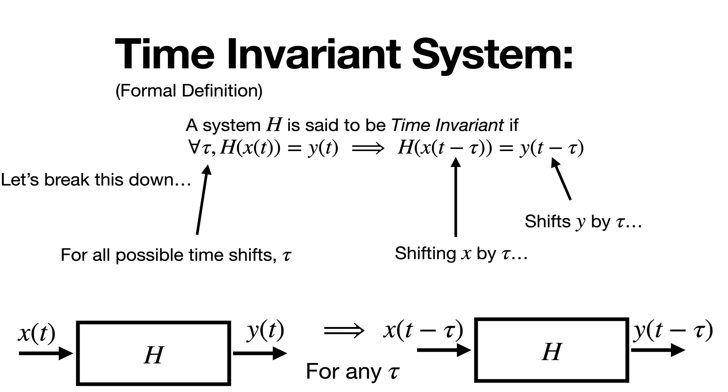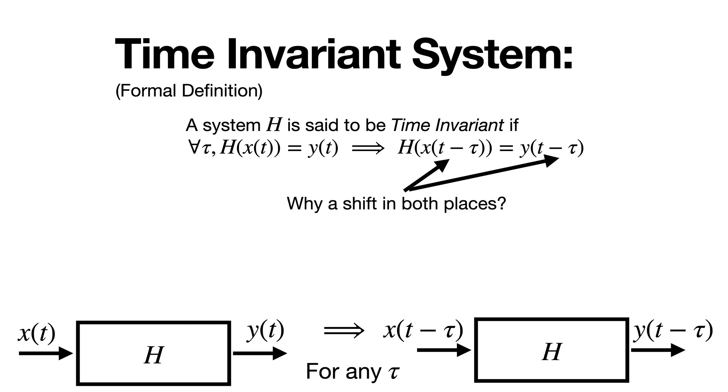Now one question you may be asking is why do we see this shift in both places? Well for the input-output relationship to be maintained, shifting one must imply shifting of the other. Remember that x and y are both functions of time, so the time offset between them needs to remain the same if we delay them. So if we delay one, we need to delay the other to maintain the relative time offset between the input and output.